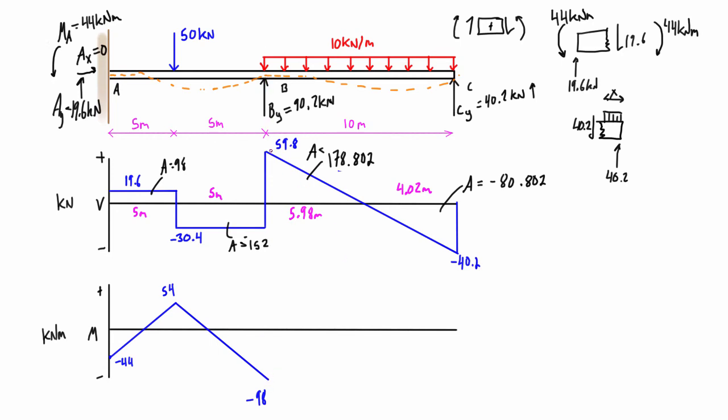Now in this next region, we have positive change because we have positive area, but because this is a linear section, we have actually a parabolic curvature on the bending moment diagram. So basically up until this point is where we have positive change, and then the area of the shear force diagram becomes negative, and then we start getting negative change. Now when we have negative 98 plus 178.802, that's going to bring us up to 80.802. And then the curvature is the same on the way back down, and 80.802 minus 80.802 brings us right back down to zero.